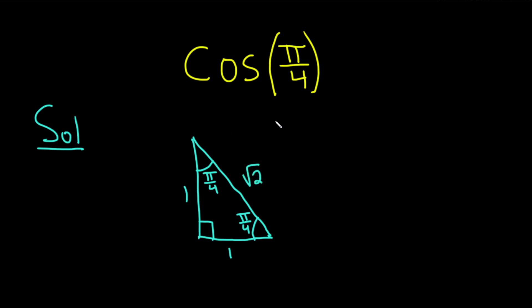So this special triangle together with SOHCAHTOA will allow you to compute all of the trig function values for pi over 4. So you can do sine, cosine, tangent, secant, cosecant, cotangent, etc.